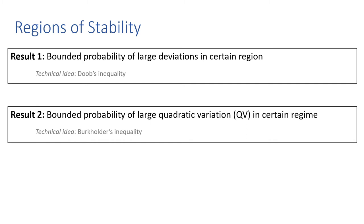Quadratic variation describes a measure of the variation of the price process. So in particular, with large probability, the price process is not varying very much in the stable region.